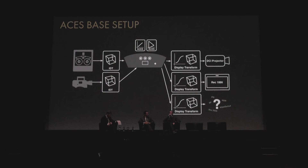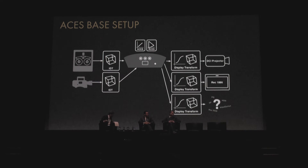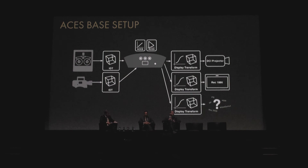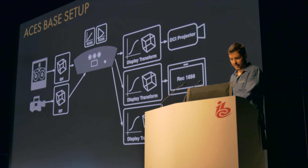The graded ACES images get transformed on the output side and tone mapped to the dynamic range and the characteristics of the output display — let's say a projector calibrated to DCI-P3, or a video display calibrated to REC 1886, for example. And here on the bottom I added something for future color spaces that are in progress, some of them already done.